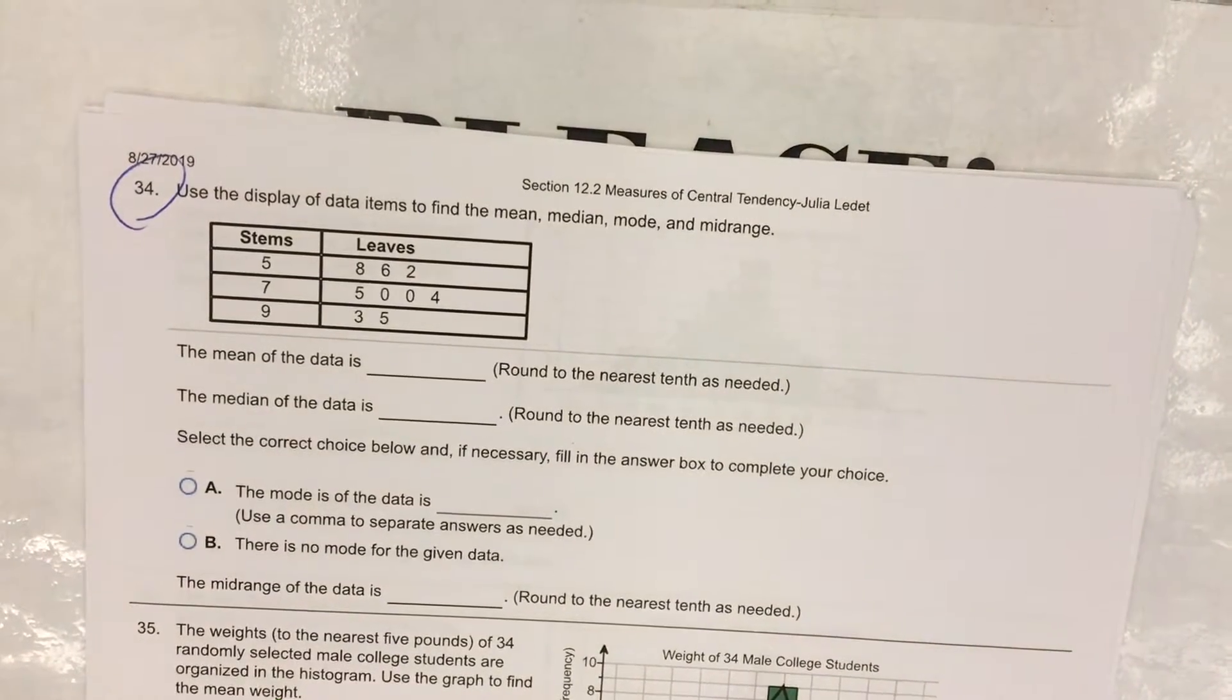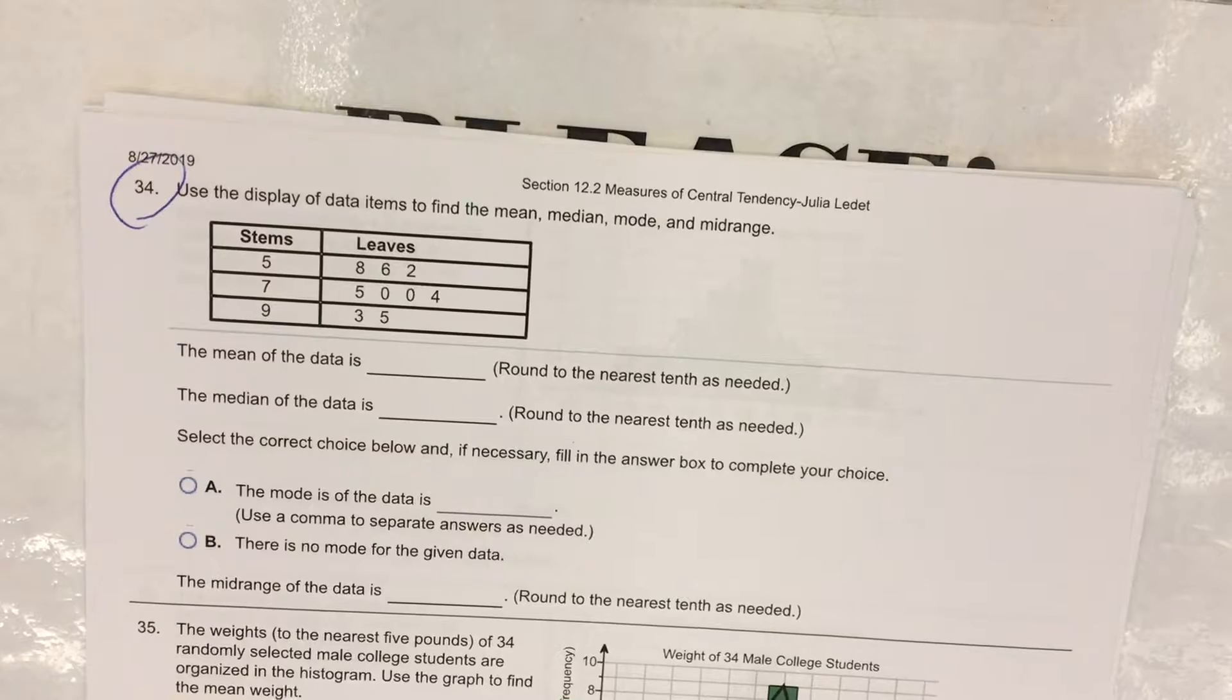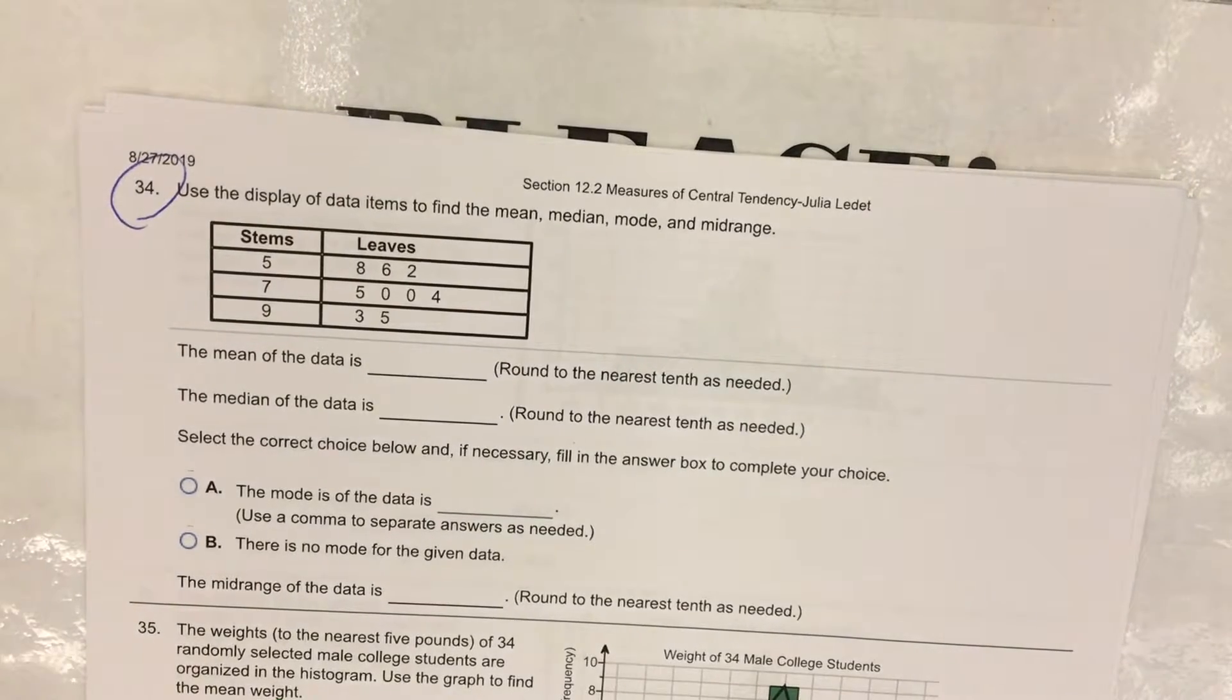On 34, you are given the stem and leaf plot. You have to do all four things: find the mean, find the median, find the mode, and find the mid-range.